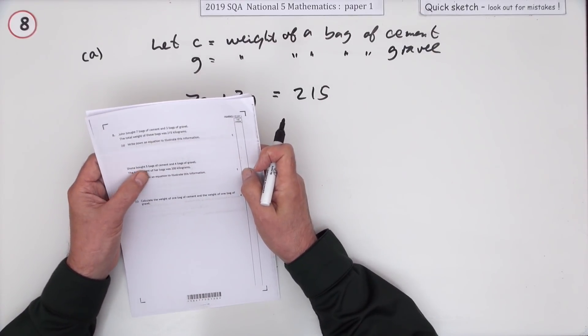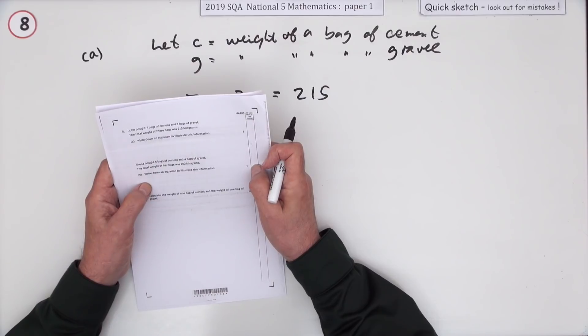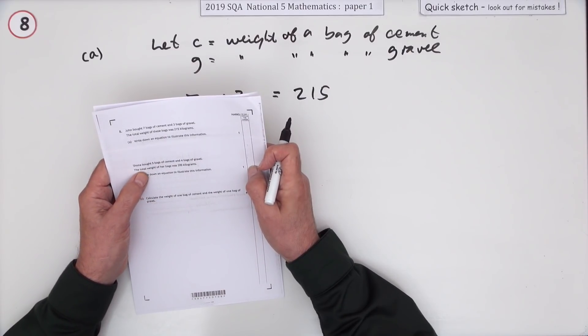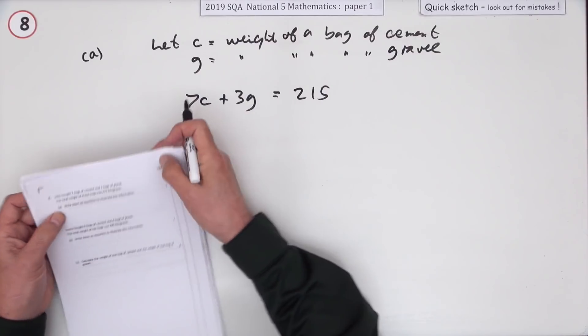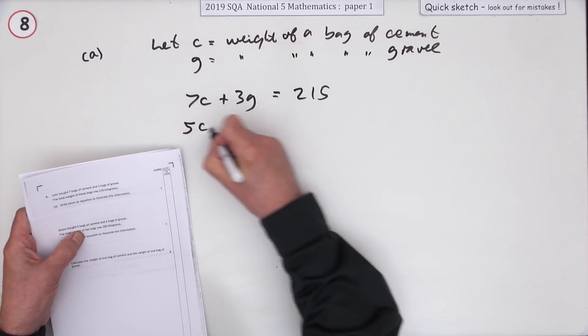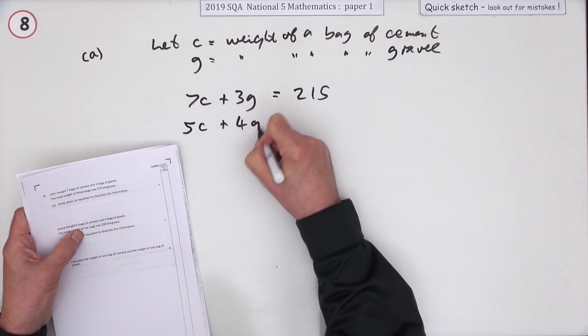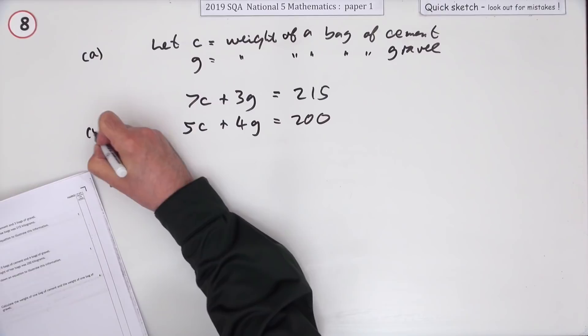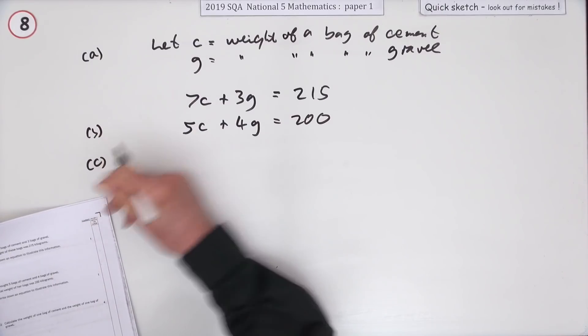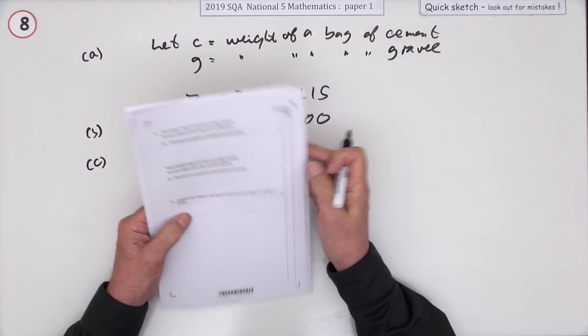Shona bought five bags of cement and four bags of gravel. The total weight of that was 200. Write down an equation for this: five bags of cement and four bags of gravel come to 200. So there's two marks straight away for that.